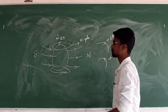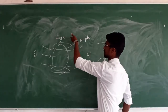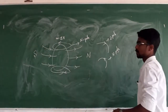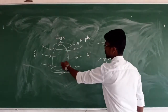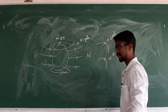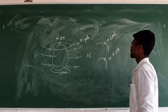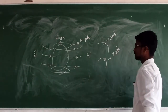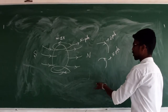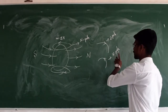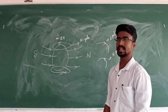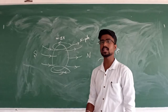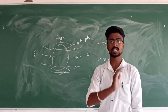So, when current flows in a current-carrying loop in a clockwise direction, the face of the loop behaves as an S pole. If it is anticlockwise, it behaves as a North pole. In this way, you can observe a magnetic dipole moment in a current-carrying loop.